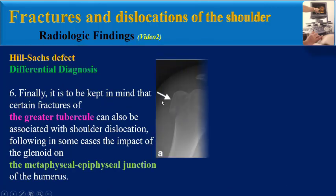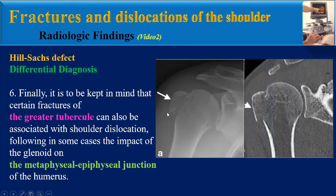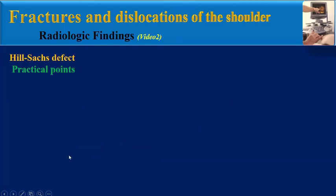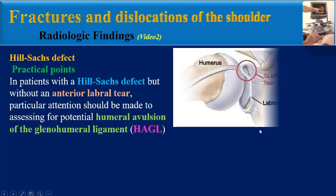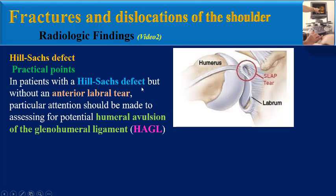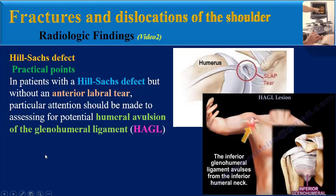Finally, it is to be kept in mind that certain fractures of the greater tubercle can also be associated with shoulder dislocation, following in some cases the impact of the galanoid on the metaphysial-epiphysial junction of the humerus. Also, pay attention to these practical points: in patients with a Heel Socks defect but without an anterior labral tear or SLAP tear, particular attention should be made to assessing for potential humeral avulsion of the glenohumeral ligament or Hagel lesion.